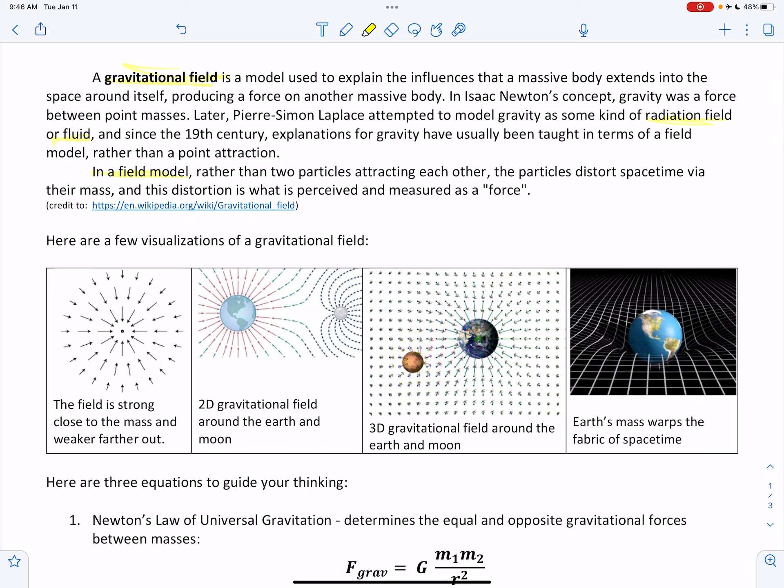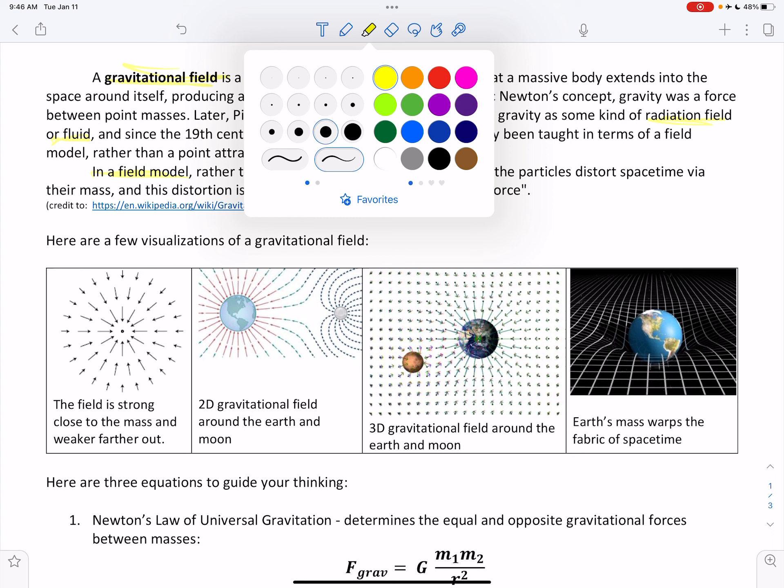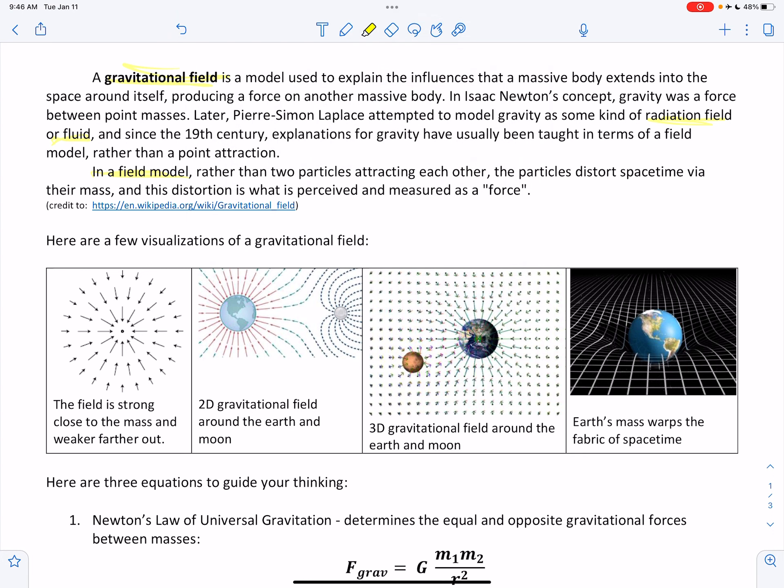So I've got a few visualizations over here. In this first visualization, this object in the center is supposed to be the mass, and that mass is distorting the space around it, creating a field of force. You'll notice that all of the lines are pointing inwards towards that mass, because gravity is an attractional force. It pulls things inward. And notice that as you go farther out, the lines get pretty short. The big idea is that the field is strong close to the mass and weaker farther out.